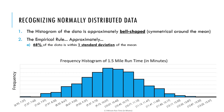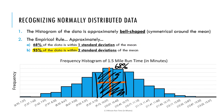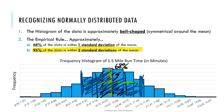First, 68% of the data is within one standard deviation of the mean. So if here's the mean, if I were to go one standard deviation below and one standard deviation above the mean, then 68% of the data would be in that range. Second, 95% of the data must be within two standard deviations of the mean. So if the mean is here at the center, going two standard deviations away from the mean in both directions, I would have 95% of the data within those two standard deviations from the mean.